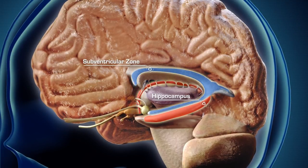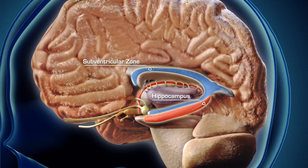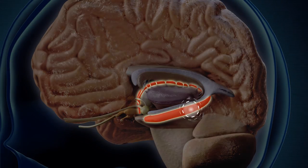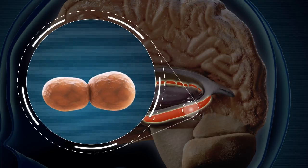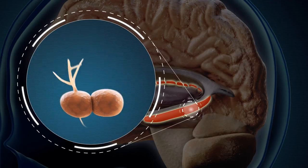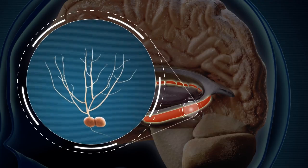There are two regions of the adult brain, the subventricular zone and the hippocampus, where stem cells multiply and create new neurons. This adult neurogenesis has been shown to be important in memory and learning.